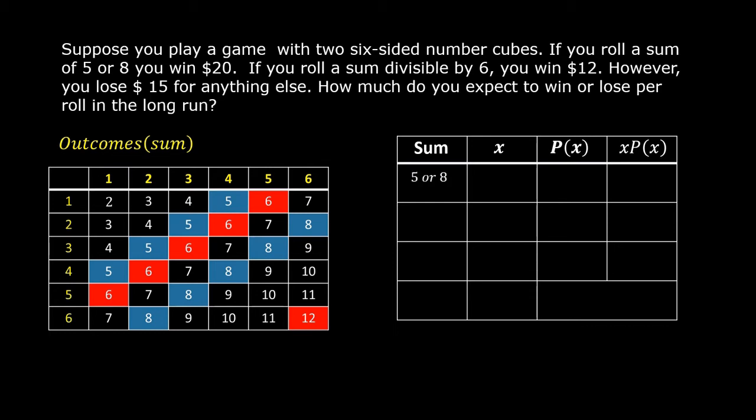Our first sum is 5 or 8. According to the problem, if you roll a sum of 5 or 8, you win $20. So, $20 is the first value of x. Let us count the sums of 5 or 8: 1, 2, 3, 4, 5, 6, 7, 8, 9. There are 9 of them. So, the probability of winning $20 is 9 out of 36 because there are 36 outcomes. Multiply 20 by 9 over 36. The product is $5.